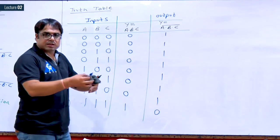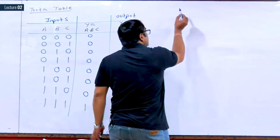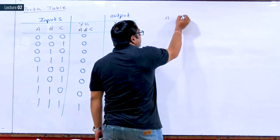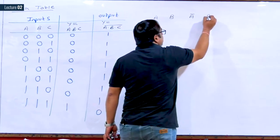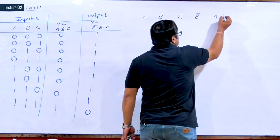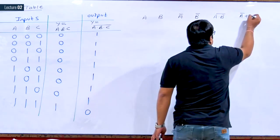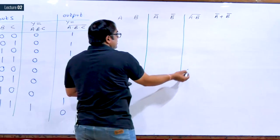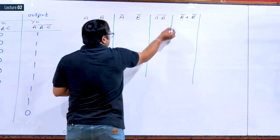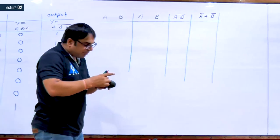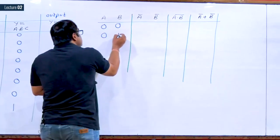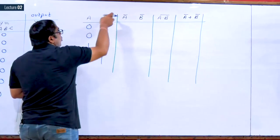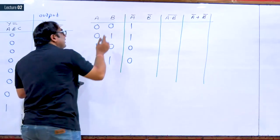Now let us look at some more details about NAND gate. I am starting a table with columns: inputs A and B, then A complement and B complement, next column A·B whole complement, and next column A complement + B complement. Since we have only two inputs, we will have four combinations: 00, 01, 10, and 11.